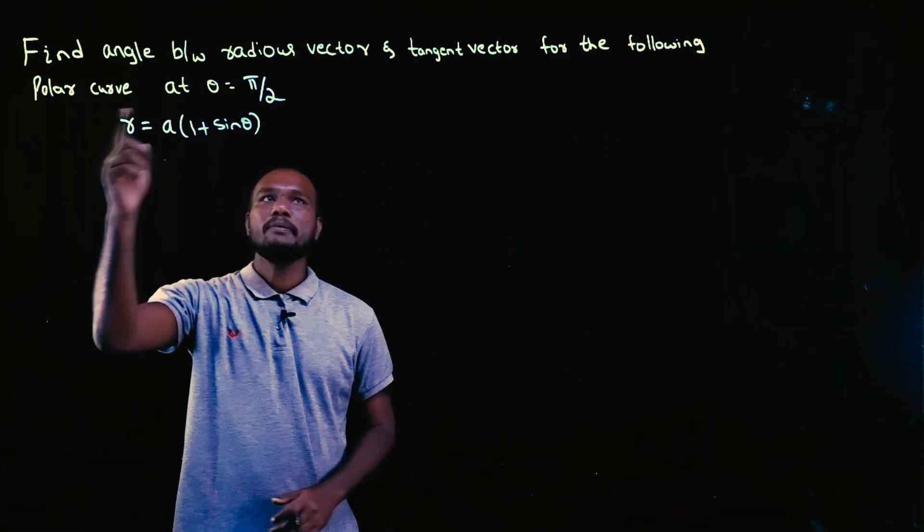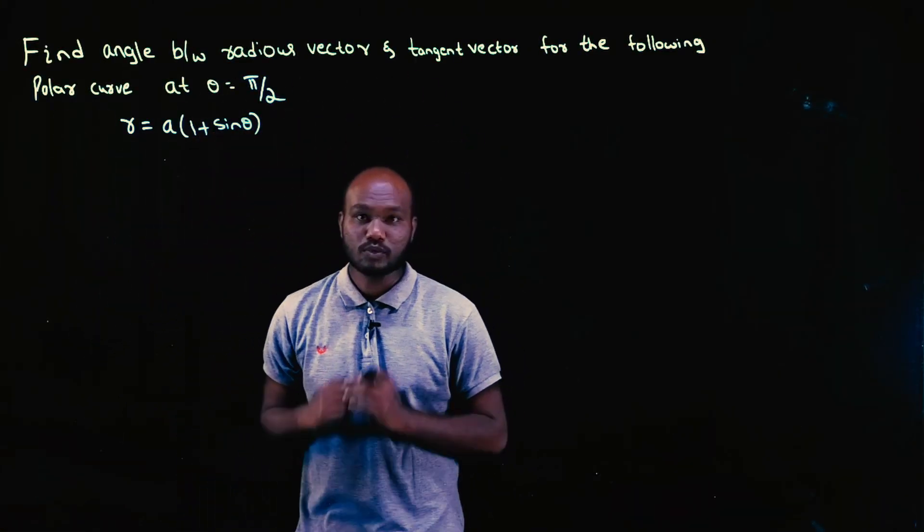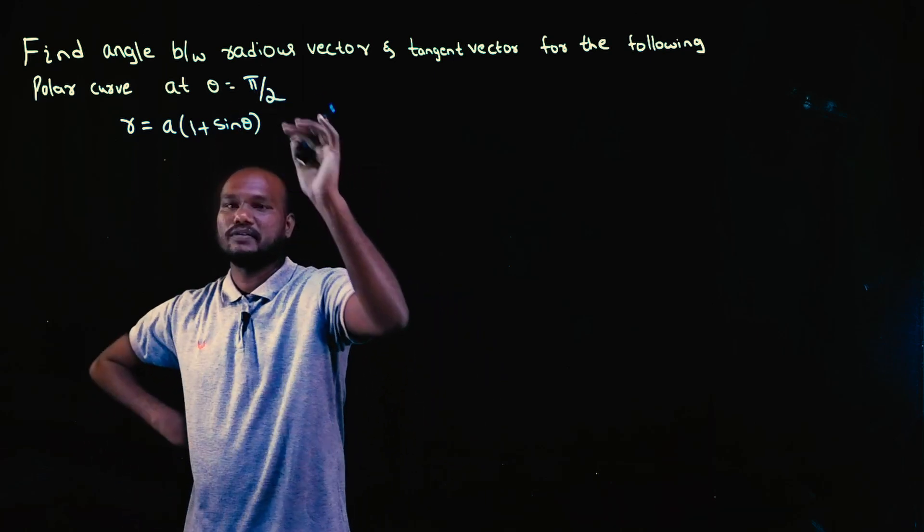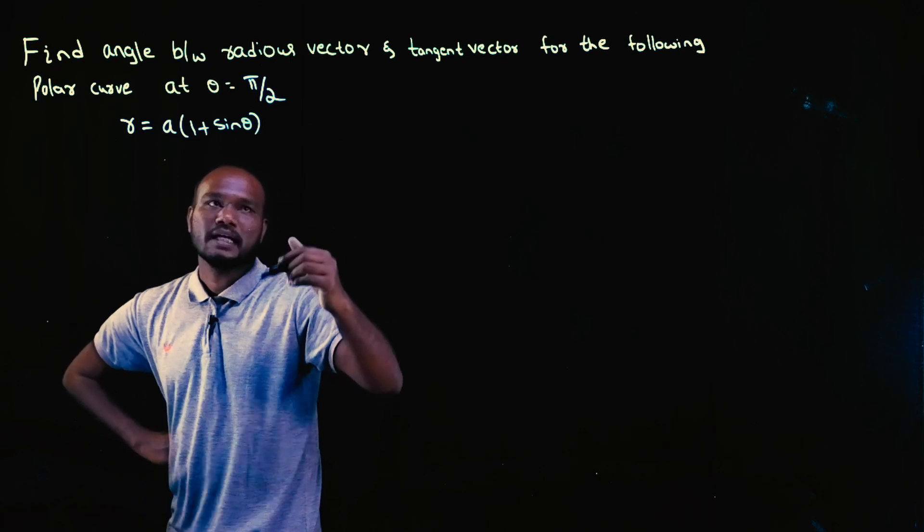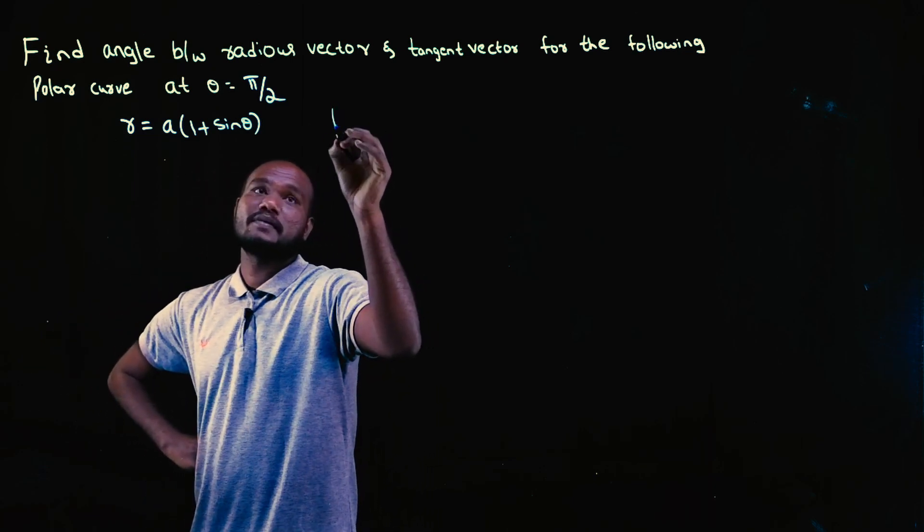In this question, they're asking to find angle between radius vector and tangent vector. The data is given as theta value and also the polar curve is given, so to find angle between the radius vector and tangent vector.